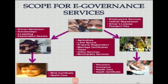Here are some scopes for e-government. There are many scopes of e-government, including: school admission, scholarship, e-learning, examination results, birth certificates, health care, agriculture, land records, property registration, marriage certificate, taxes, utility services, municipality services, pension, insurance, health care, debt certificate, employment services, vehicle registration, driver licenses, passport, visa, and many more.